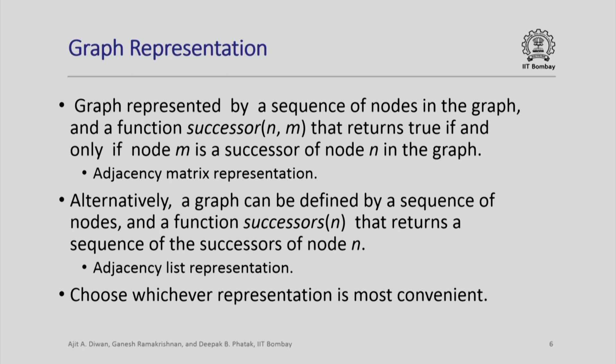Any functions on a graph can be defined using just these two things: what are the nodes in the graph and which nodes are successors of which nodes. Alternatively, we can define a graph using a different function called successors(n) that returns a sequence of all successors of node n. Rather than taking a pair of nodes and returning true/false, this gives us the list of all successors of a given node n. This is called the adjacency list representation. Both representations are equivalent and we will choose whichever is more convenient.